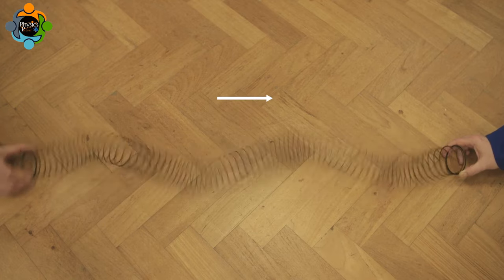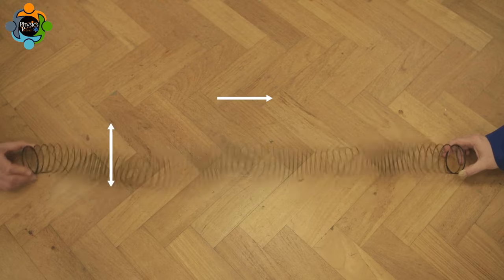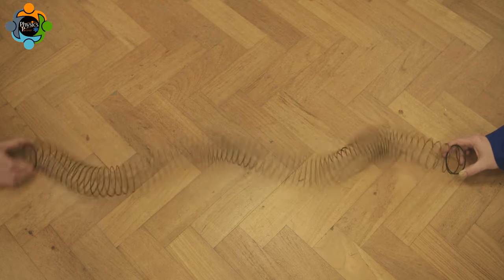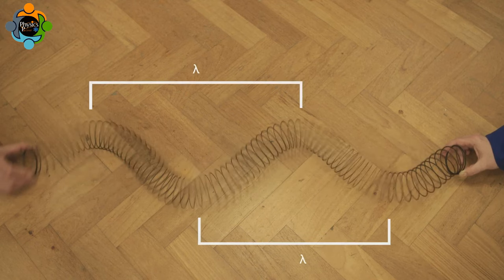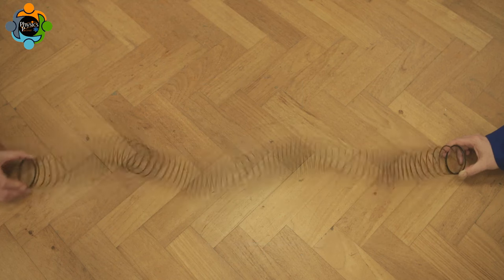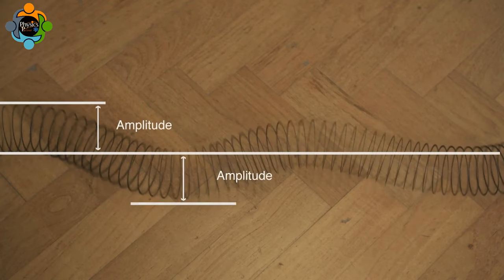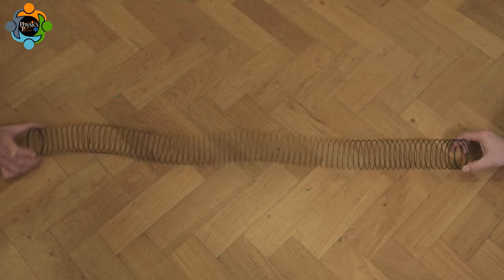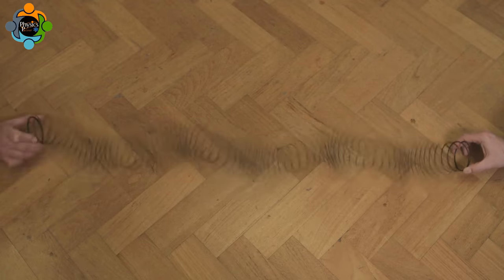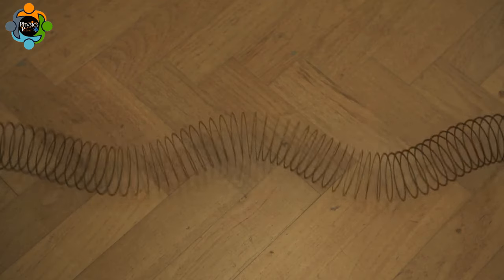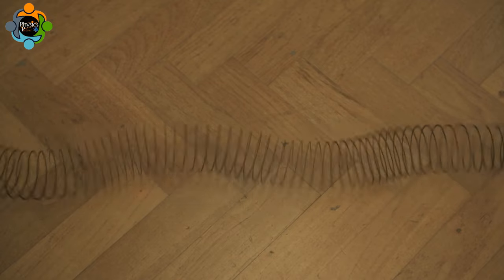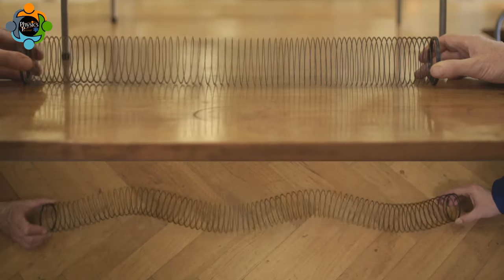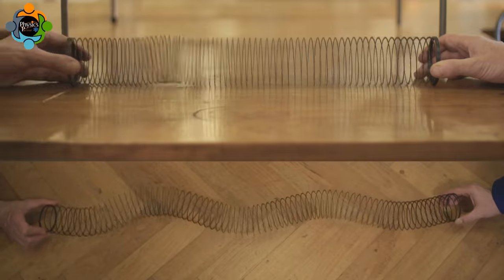This is called a transverse wave. The distance between two successive peaks or two successive troughs is called the wavelength. The amplitude is the distance from equilibrium — the middle point — to the peak or a trough. When this distance is short, the wave is described as having a small amplitude. Notice that as the number of oscillations increases, so does the amplitude. The number of waves that pass a fixed point in a second is called the frequency. If one peak passed a point in one second, this would be one hertz; if two passed in one second, the frequency would be two hertz.